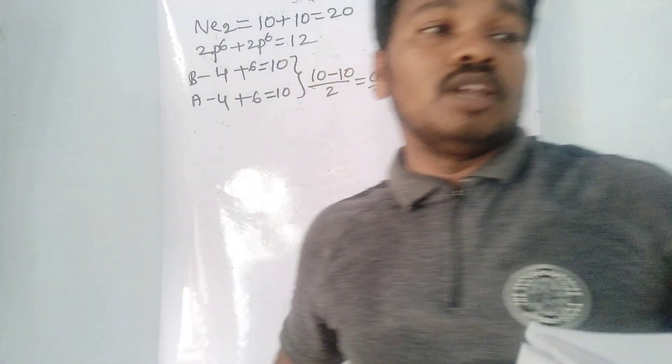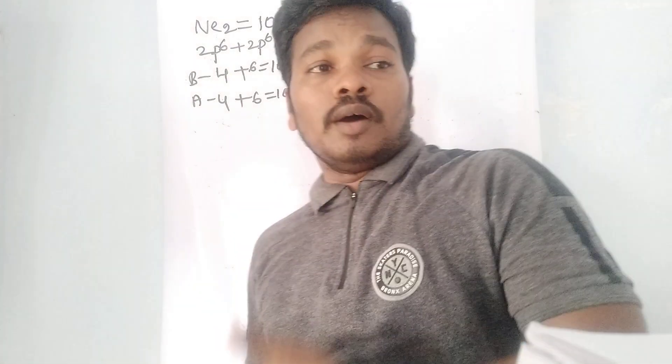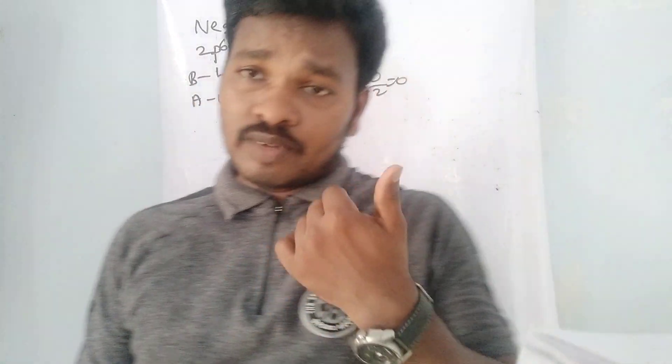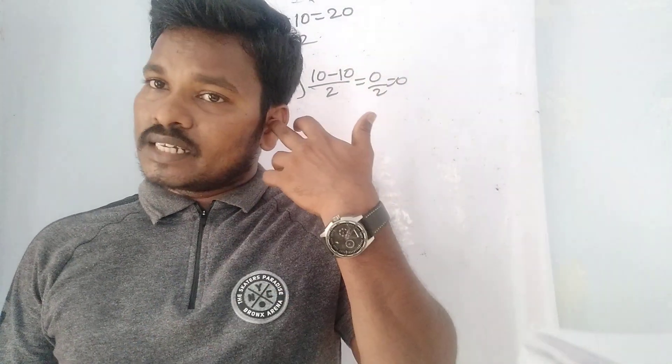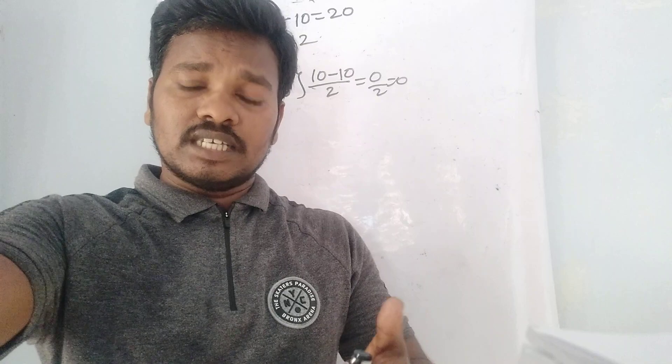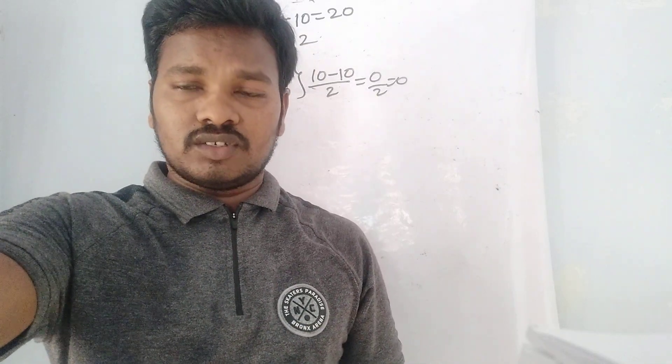For polyatomic molecules like NO2, N2O4, N2O5, N2O3 and similar, there is a quick method. You just count the total number of valence electrons — or alternatively the total electrons — in the molecule. If the sum is even, the molecule is diamagnetic. If the sum is odd, the molecule is paramagnetic. You can easily determine the magnetic nature this way.